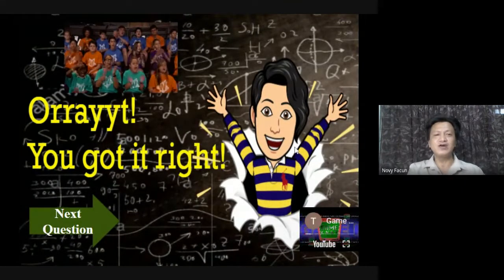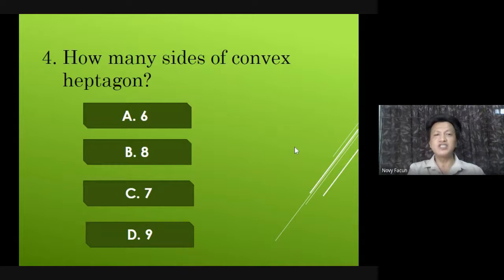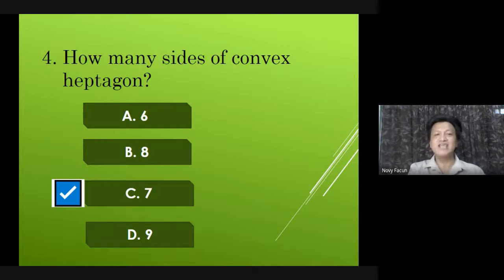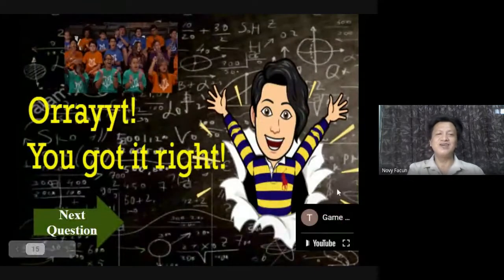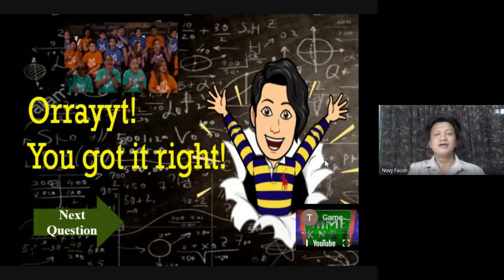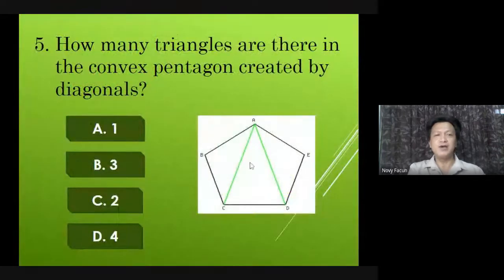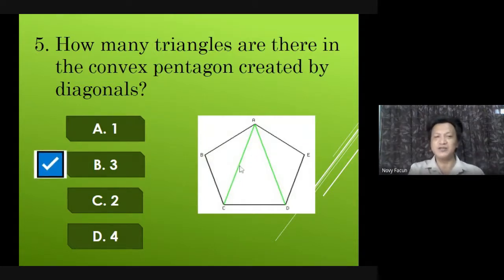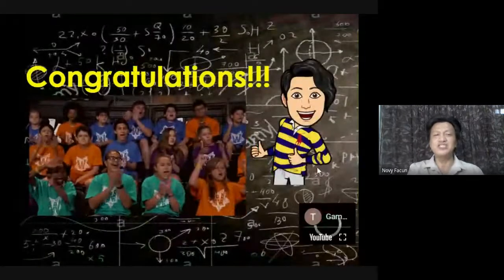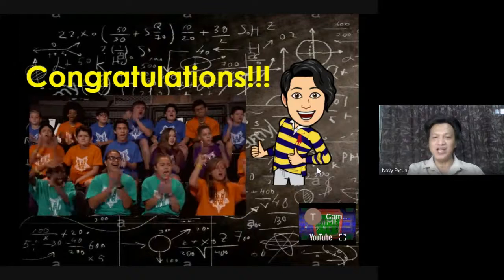Next question: How many sides does a convex heptagon have? Yes, Lma — you got it, that is letter C, seven. You got it right. And for the last number: How many triangles are there in a convex pentagon created by diagonals? Yes, Sofia — very good answer, that is letter B, three. Okay, congratulations, you are all able to answer.